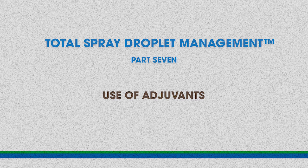Previously, we learned how both nozzles and adjuvants have an impact on droplet size. We discussed details about nozzles, and now we will explain more about adjuvants. Adjuvants play an important role in all three phases of the application process. We're going to start out with the atomization part.